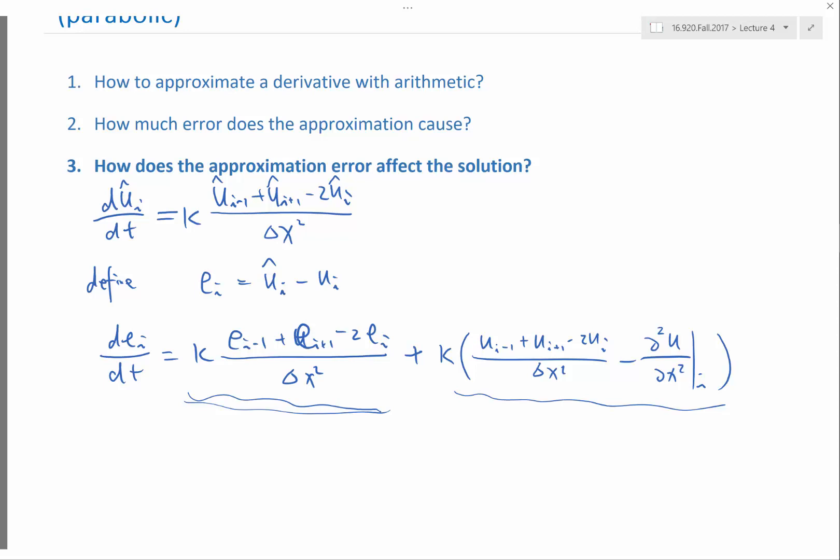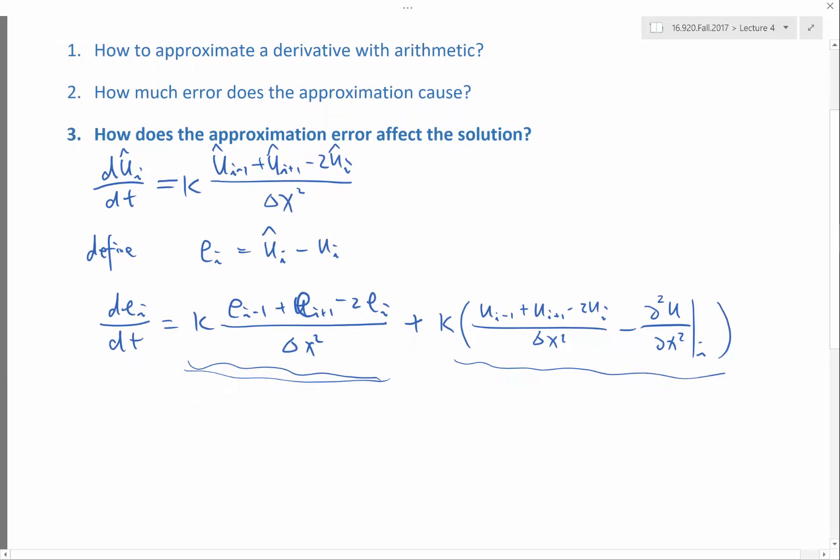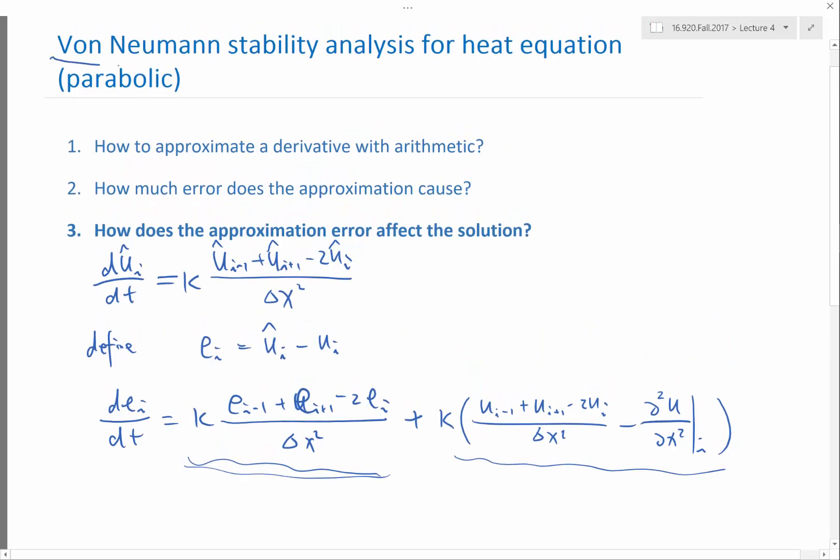So our next question really is, does this operator exponentially amplify previously added error, or does it exponentially decay the previously added error? To perform this analysis, the simplest way, the simplest scenario for us to be able to perform that analysis is when we have a periodic domain. If the domain is periodic, there is a very simple way to perform this stability analysis. This is called a von Neumann stability analysis.